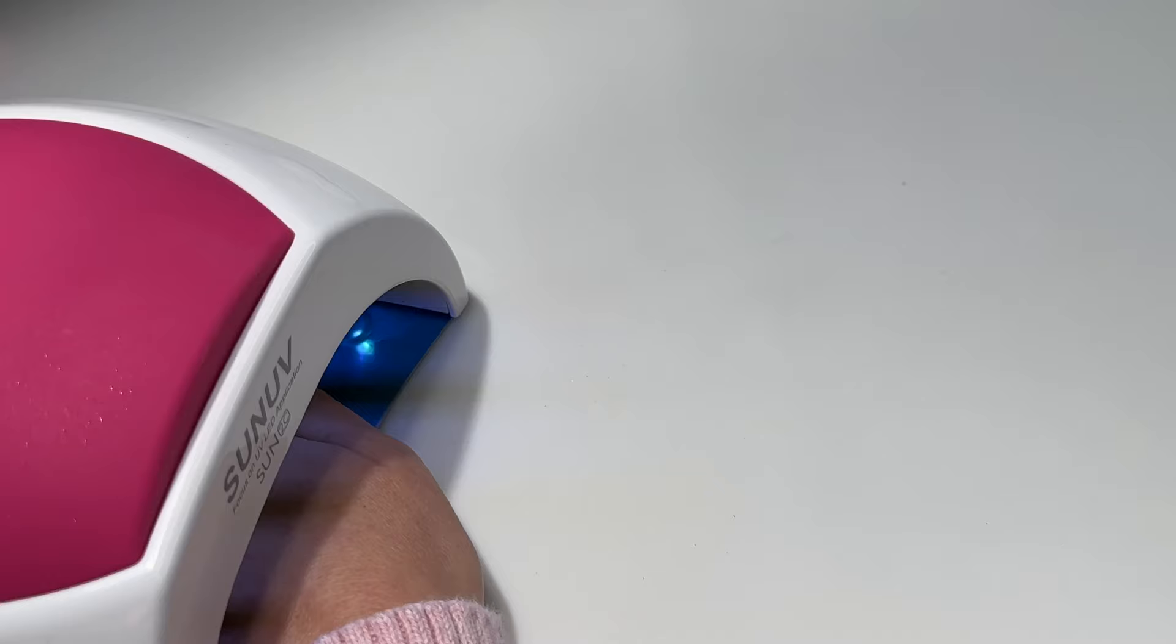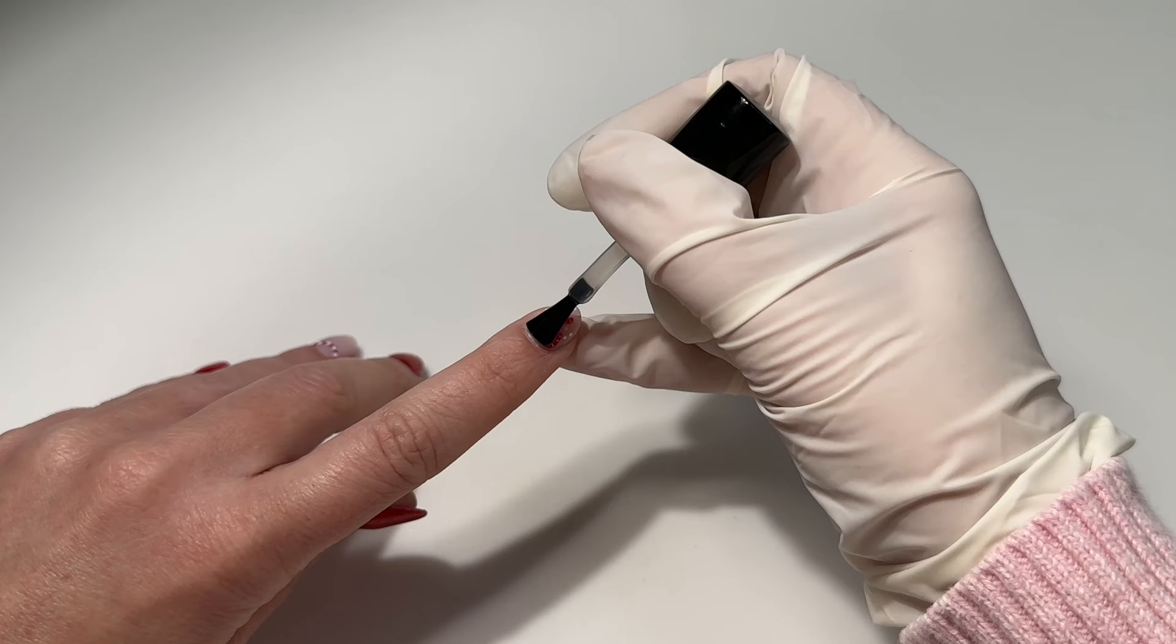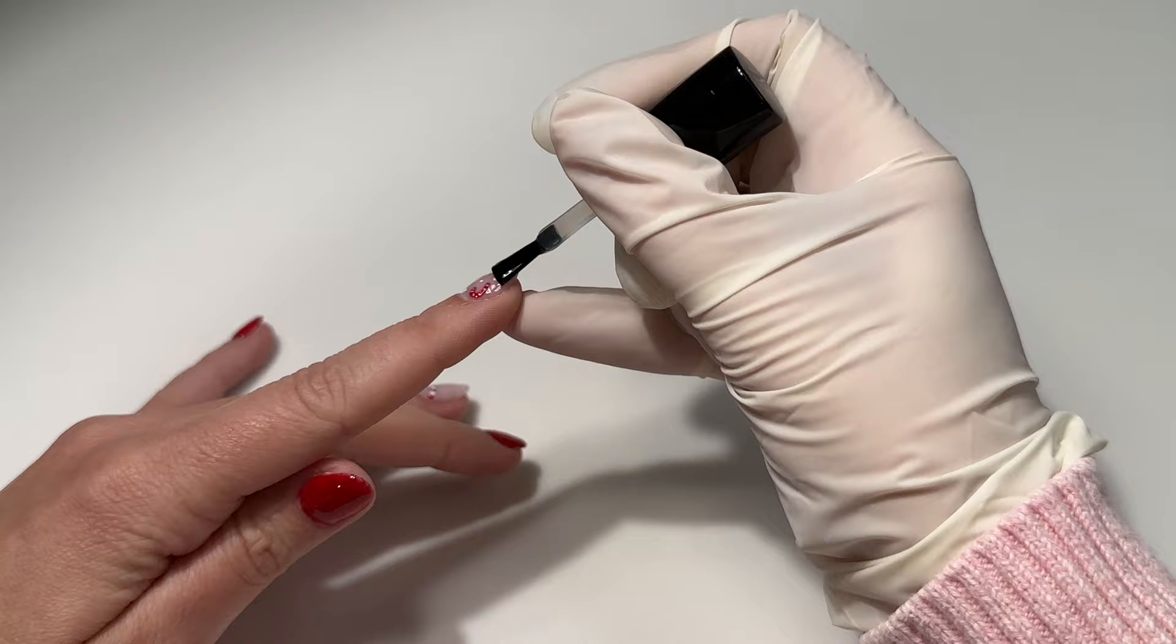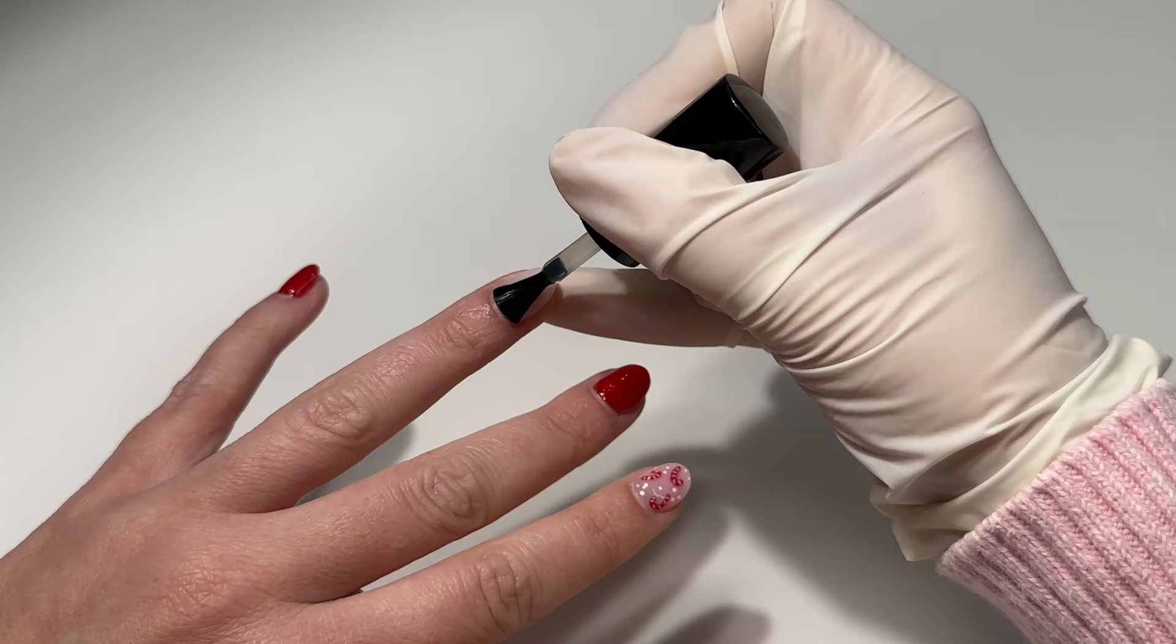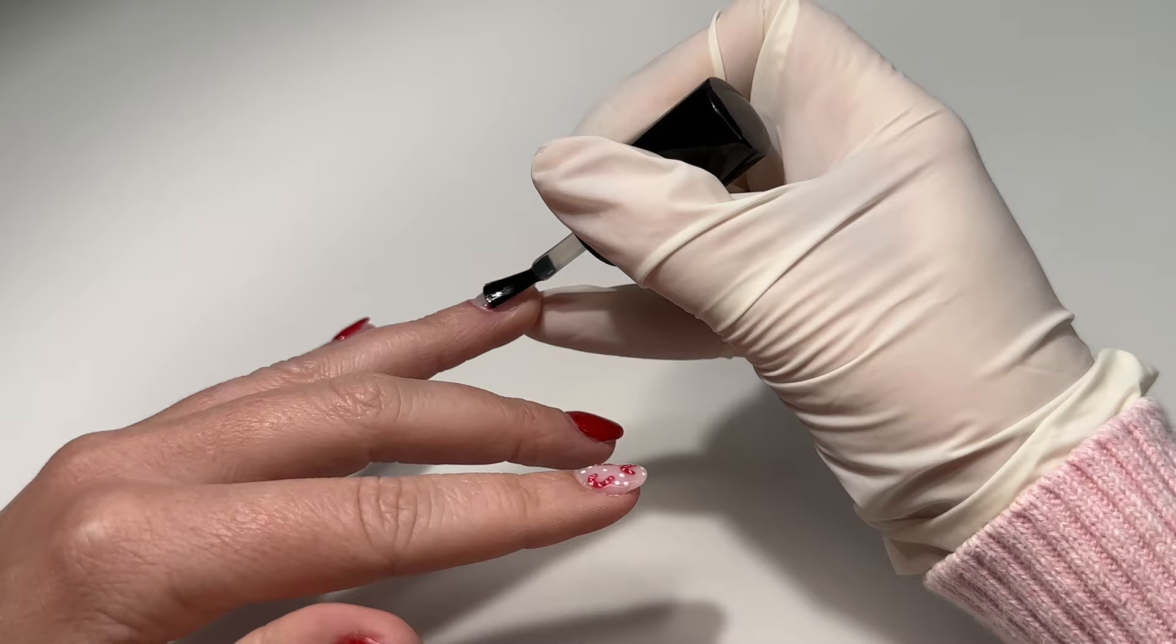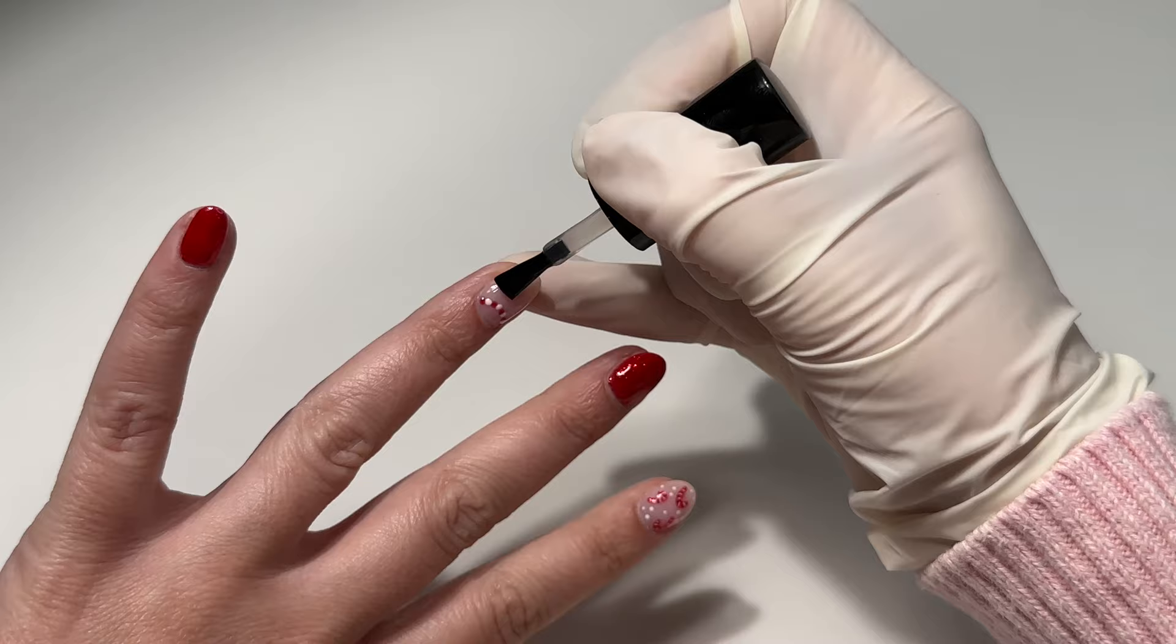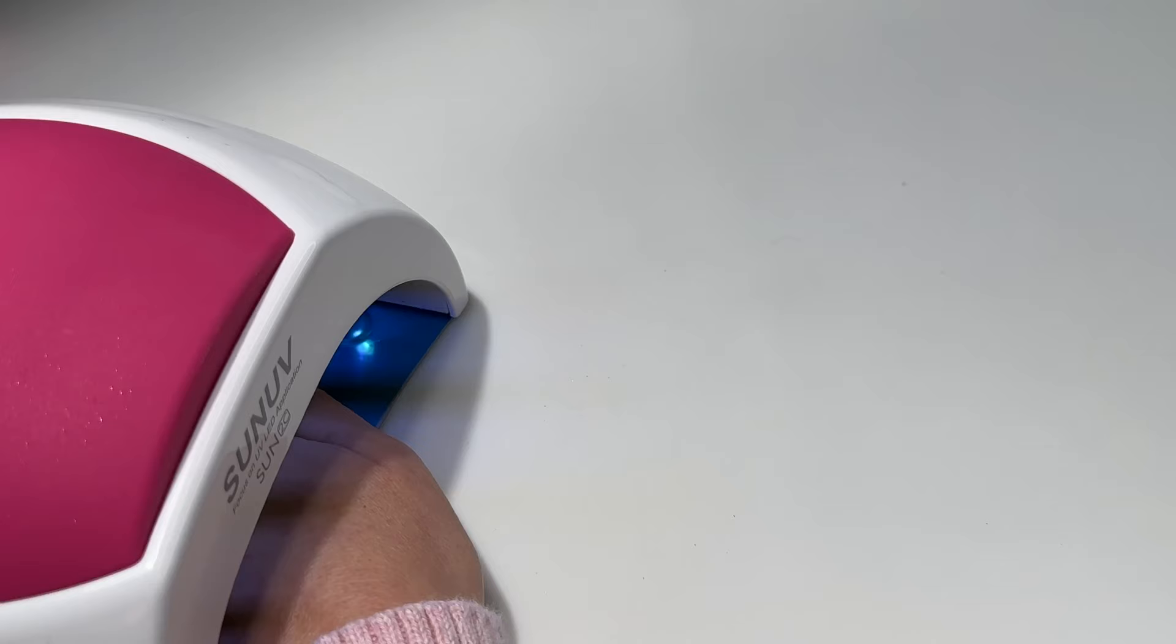We're going to do our matte top coat. This is from Dipalicious Nails, it's their Matte Velvet Gel Top Coat. I love this because if you've ever worked with matte top coats, you know they can be notorious for showing every imperfection. But this one does such a great job at still giving you that clean even look and it also has this velvety feel. I don't know how to explain it but it is so beautiful. It's my go-to and it's HEMA free.